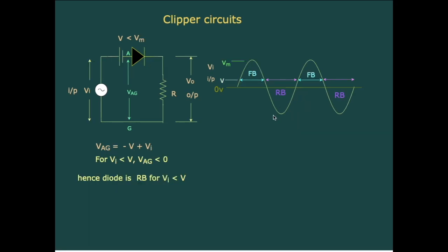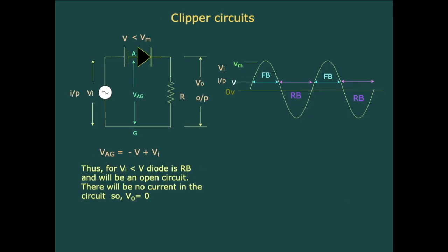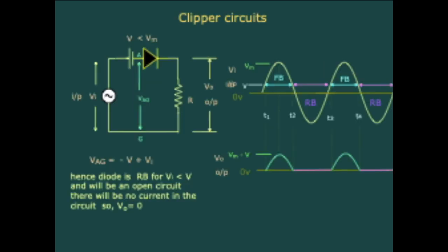From T2 to T3 Vi is less than V, so VAG is negative and the diode is reverse biased, acting as an open switch. With no current flowing, the output voltage across resistance R remains zero. We can see that when this pure sine wave is given as input, the part of the signal from T2 to T3 is clipped off, confirming this is a clipper circuit.